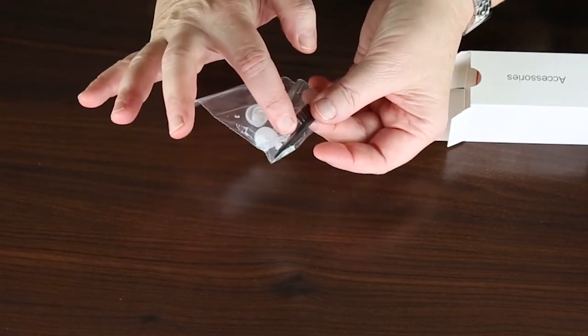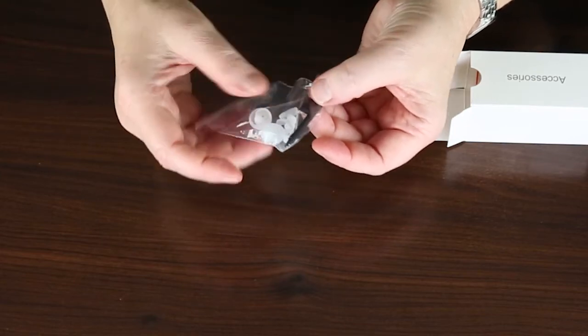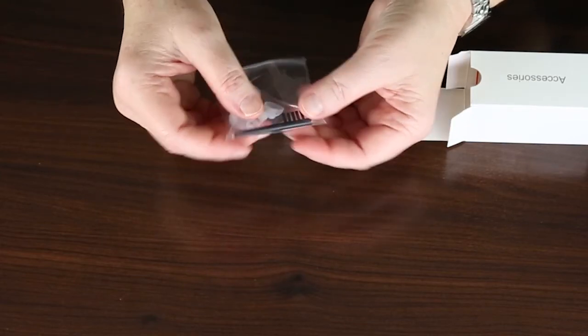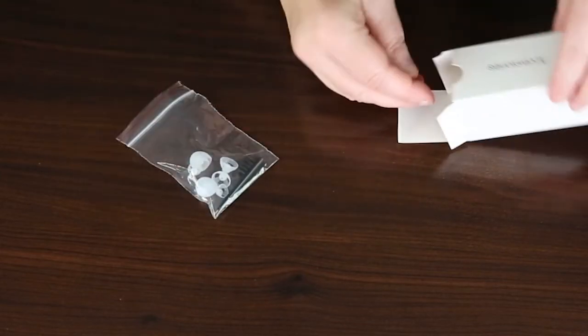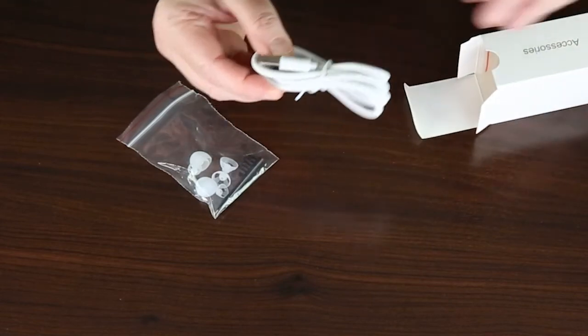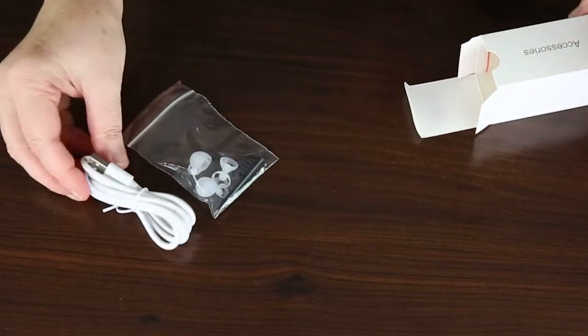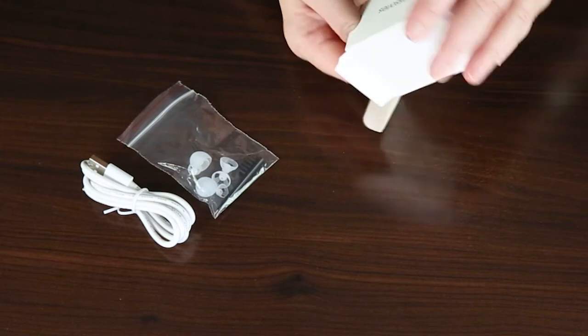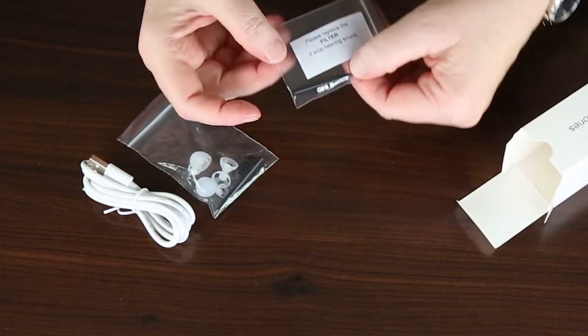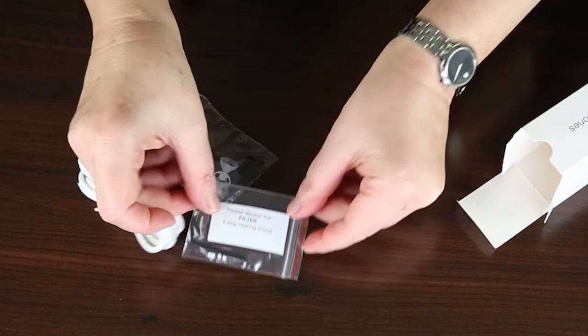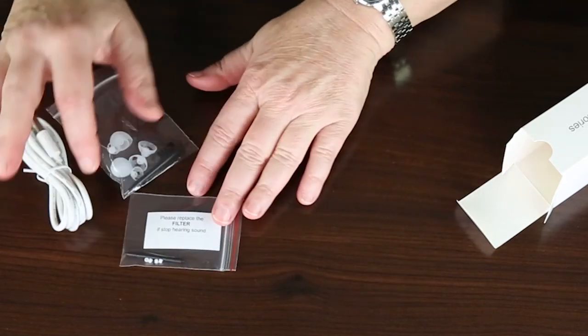Your little brush is included to keep the outside of the hearing aid clean around the dome area. You have the USB charger for your charging station, and you have your wax guards. These are the little filters. If you are not hearing sound, you will change the filter.